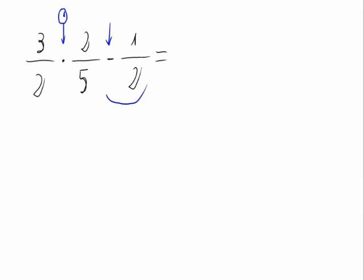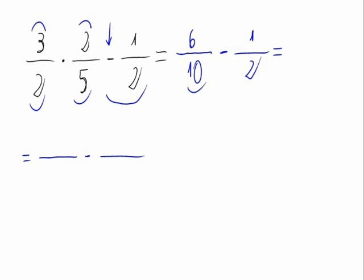We will calculate this multiplication and then subtract one half. The result of the multiplication would be numerator times numerator: 3 times 2 equals 6, and denominator 5 times 2 equals 10.